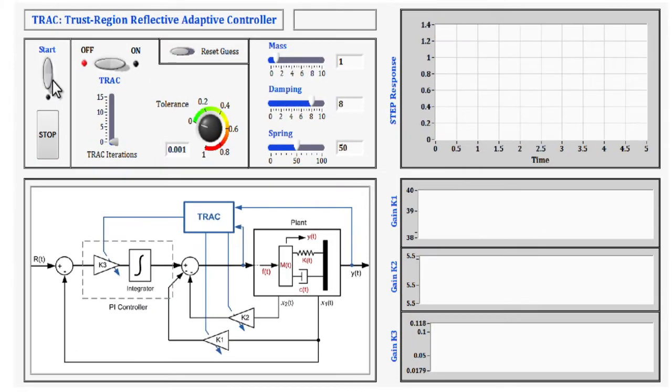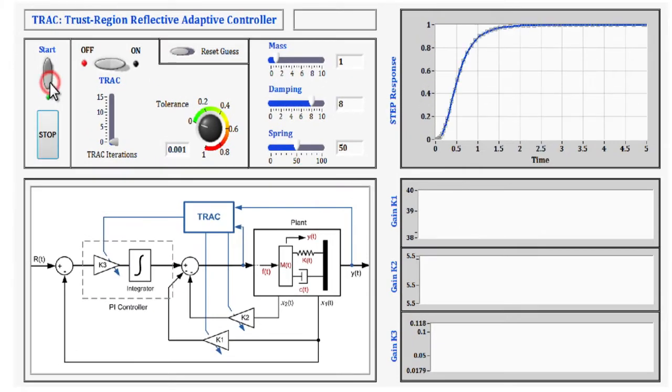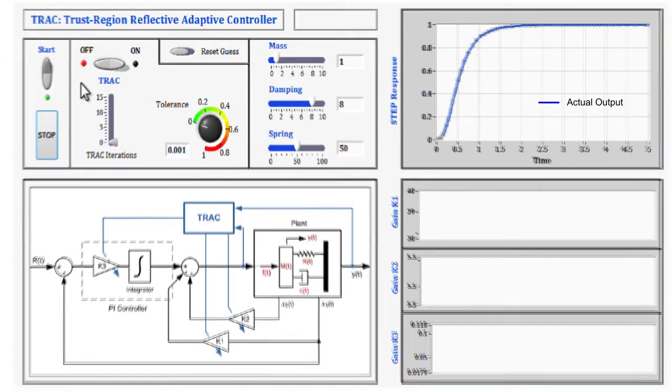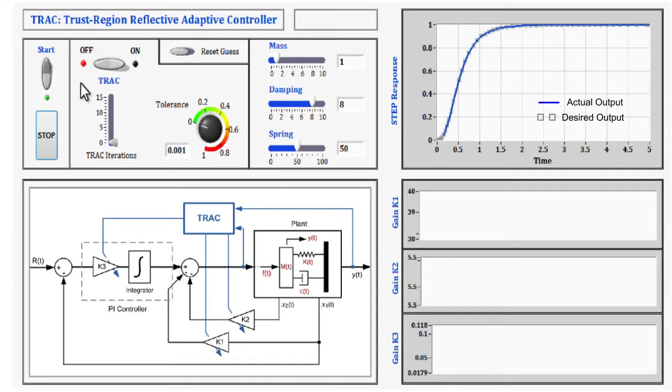Originally, when the plant is actuated with a step input, the gains are tuned such that the actual output of the system, which is represented by the blue plot, perfectly tracks the desired output represented by the squared gray plot.